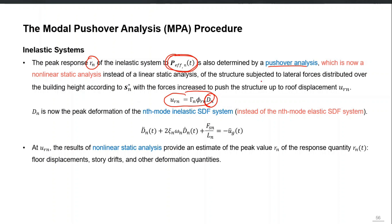We apply the structure with the modal inertia load pattern s_n, then calculate D_N, and D_N can be used in this equation to get the peak roof displacement for the inelastic case. We do it for each mode and then get the combined response.